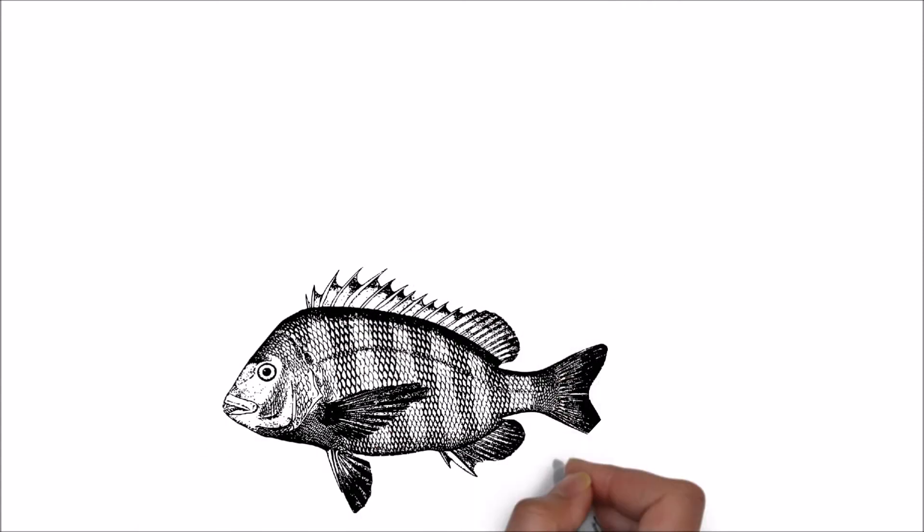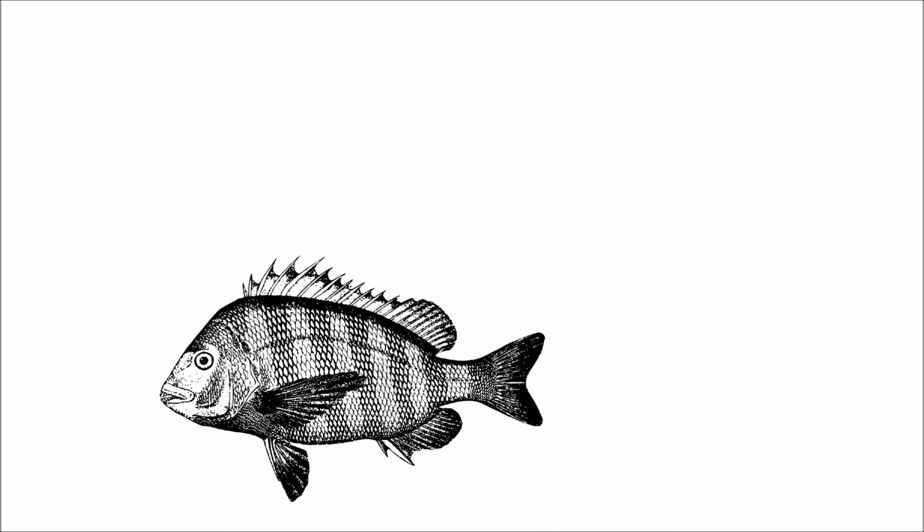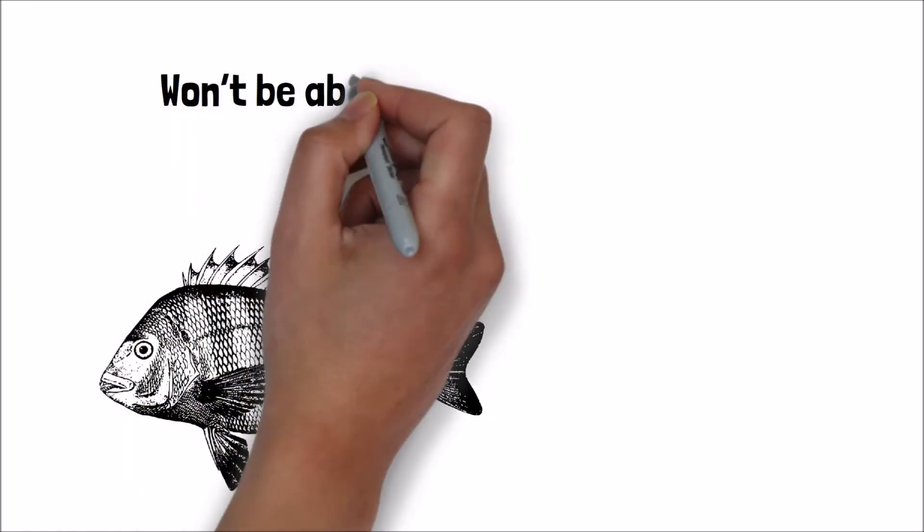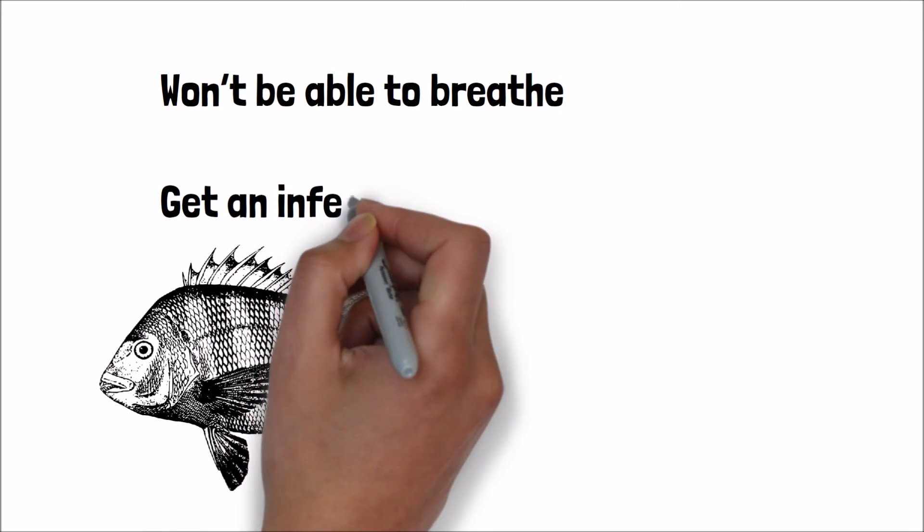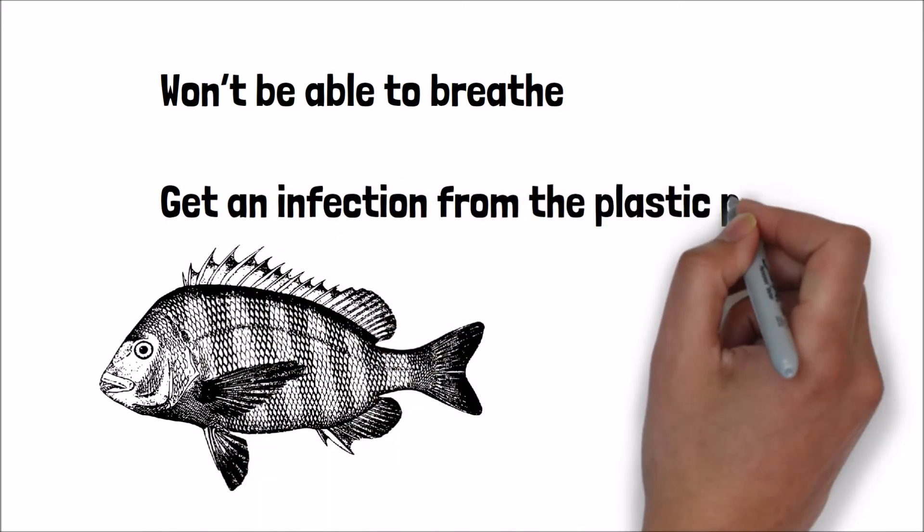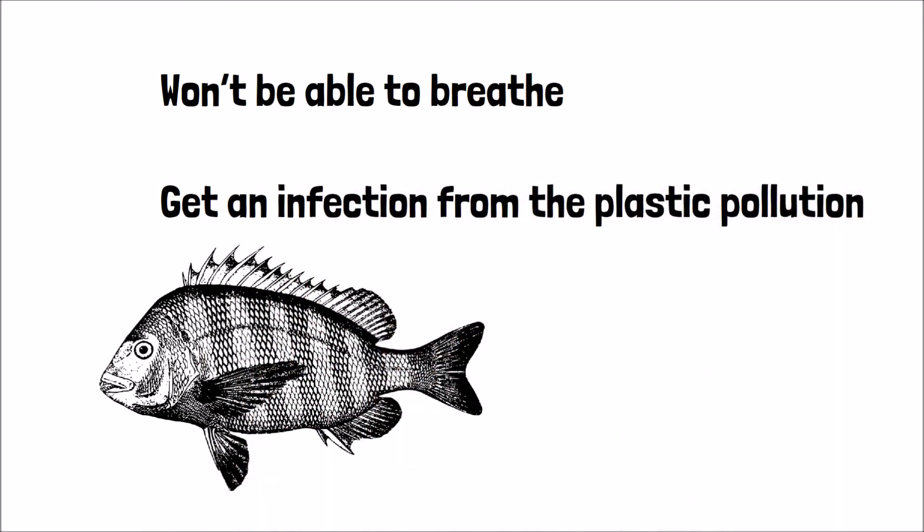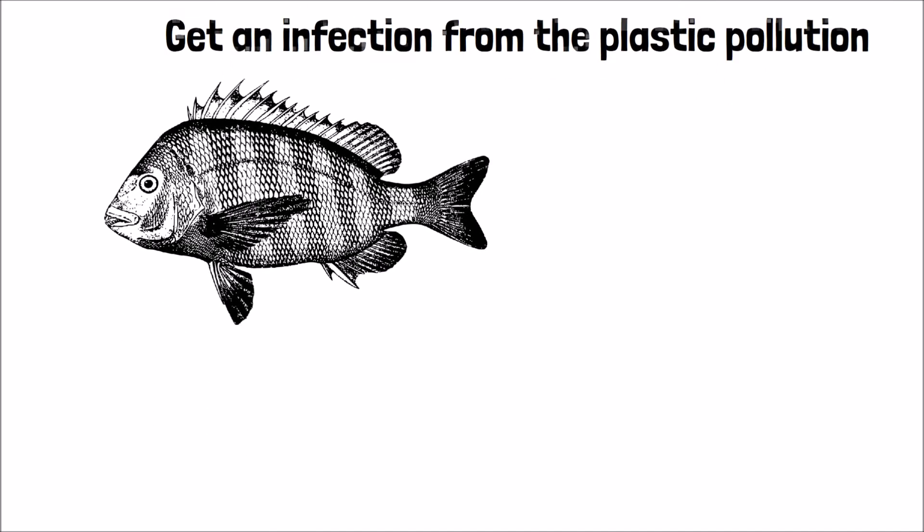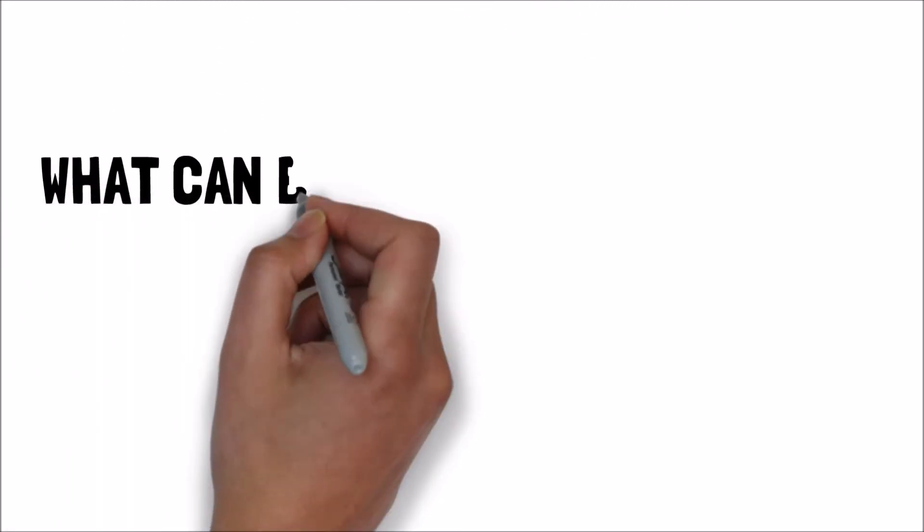Additionally, they may also eat microplastics from some of their other food sources. Ocean life can become entangled in plastic bags, rings, and other garbage. Once something is entangled, it can die because it won't be able to breathe. Ocean life can also get an infection from the plastic pollution becoming embedded in its body.